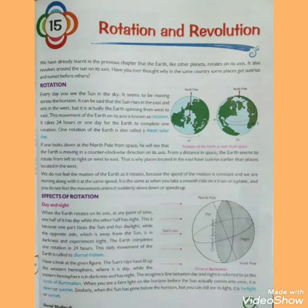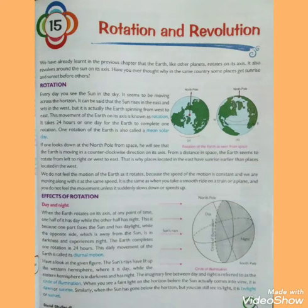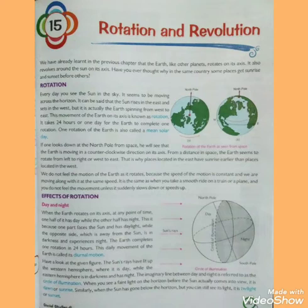When the Earth rotates on its axis, at any point of time one half has day while the other half has night. This is because one part faces the Sun and has daylight, while the opposite side, which is far away from the Sun, is in darkness and experiences night.